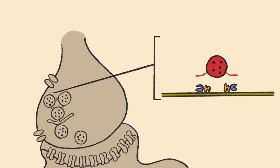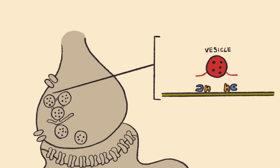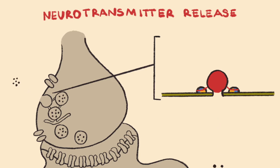What we will focus on first is the formation of the docking complex. The docking complex is characterized as being the neurotransmitter vesicle bound to the presynaptic membrane of the axon terminal. The formation of this docking complex will end with neurotransmitter release into the synaptic cleft.